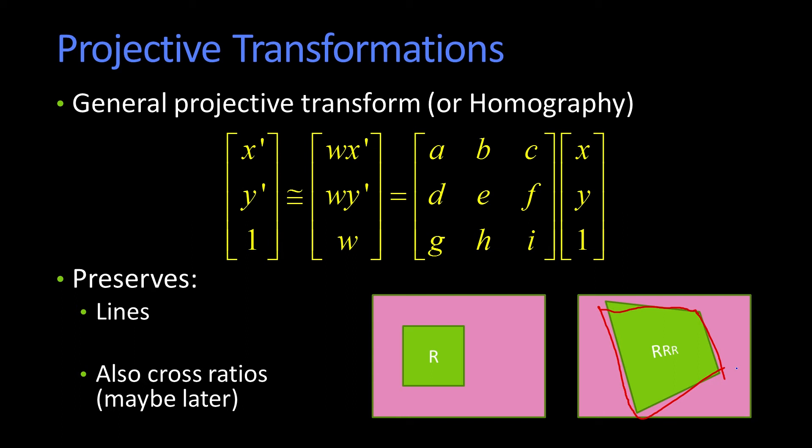Now, of course, because this is a homogeneous transform, I can scale everything by a constant and it has no impact. So I can make this last degree of freedom be a 1. And I'll get a slightly different w, but it doesn't matter, because I'm going to divide everything through by w anyway.